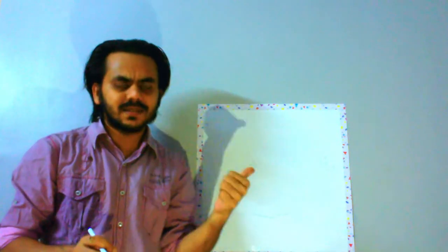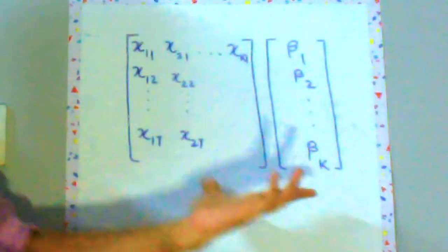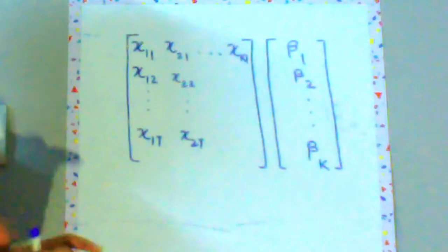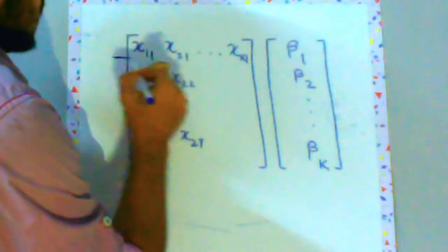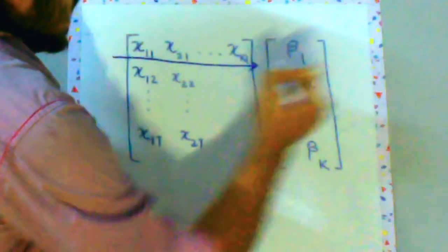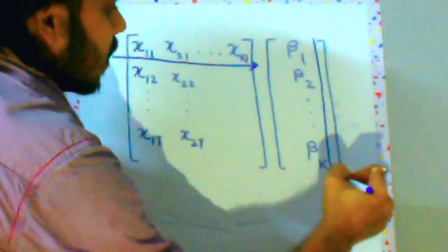So let's look at this multiplication. So how we will multiply these two matrices is in this way. You take this row first and this single column which you have. Now there is a requirement for this matrix multiplication to be possible.